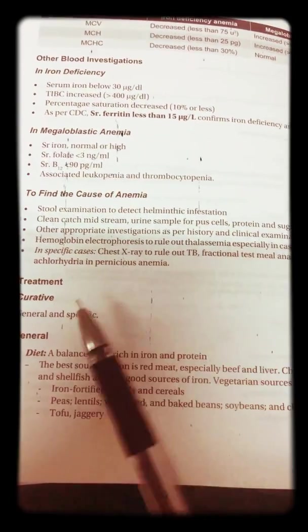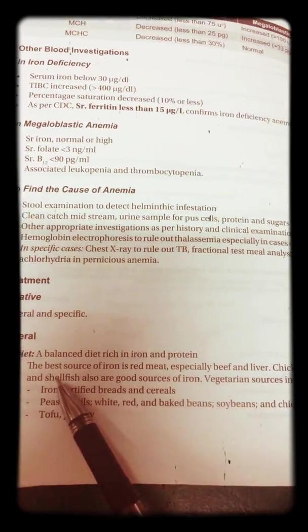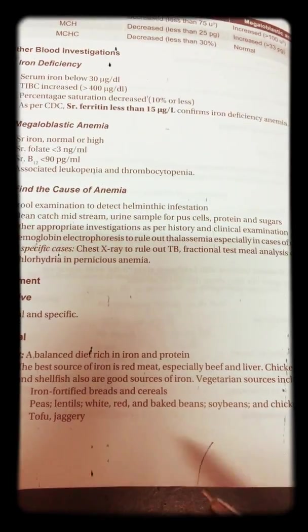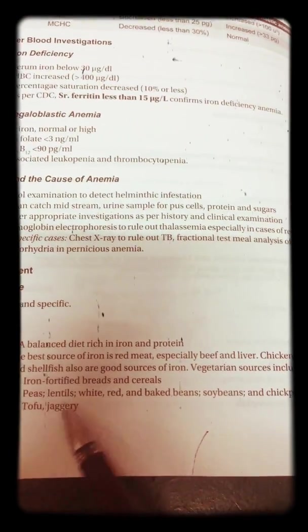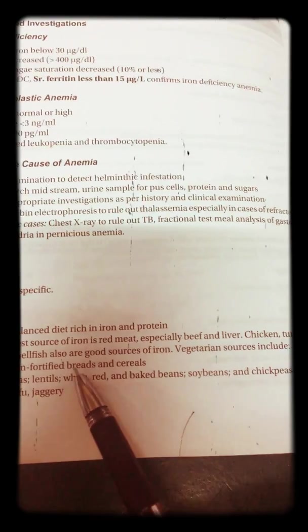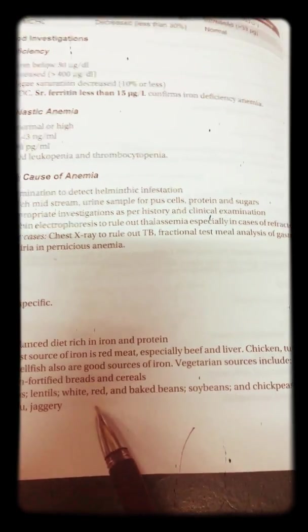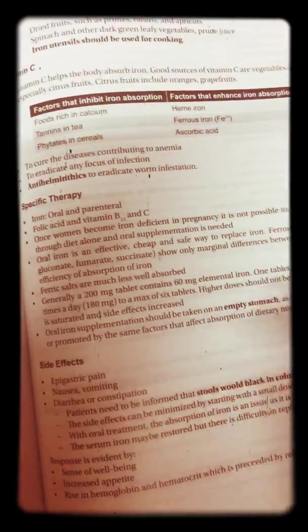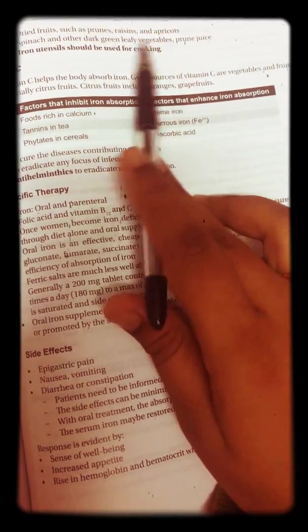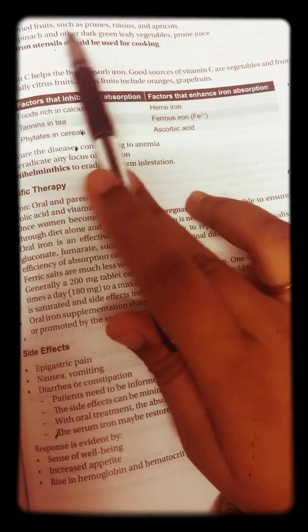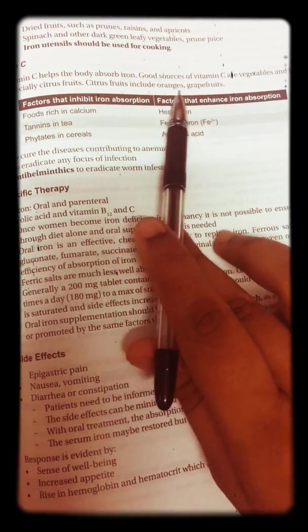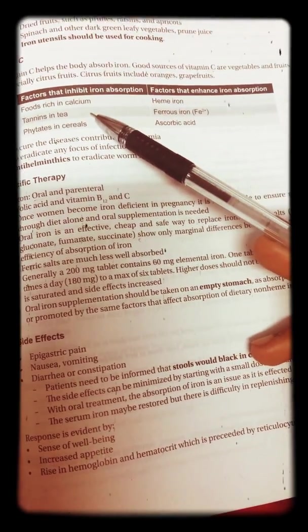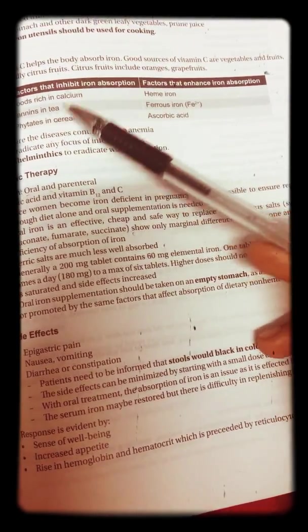Treatment is curative and general. General treatment includes diet — however, a balanced diet alone cannot replenish iron stores, hence oral iron is used. Diet can include iron-fortified breads and cereals, peas, tofu, dried fruits such as raisins and apricots, spinach and other dark green leafy vegetables. Iron utensils should be used for cooking, and vitamin C helps the body absorb iron. Good sources of vitamin C are vegetables and fruits.